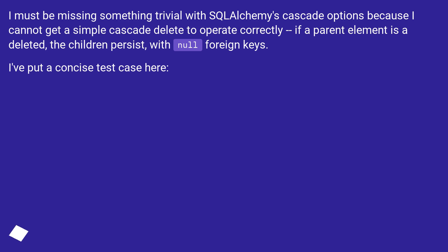I must be missing something trivial with SQLAlchemy's cascade options because I cannot get a simple cascade delete to operate correctly. If a parent element is deleted, the children persist with null foreign keys. I've put a concise test case here.